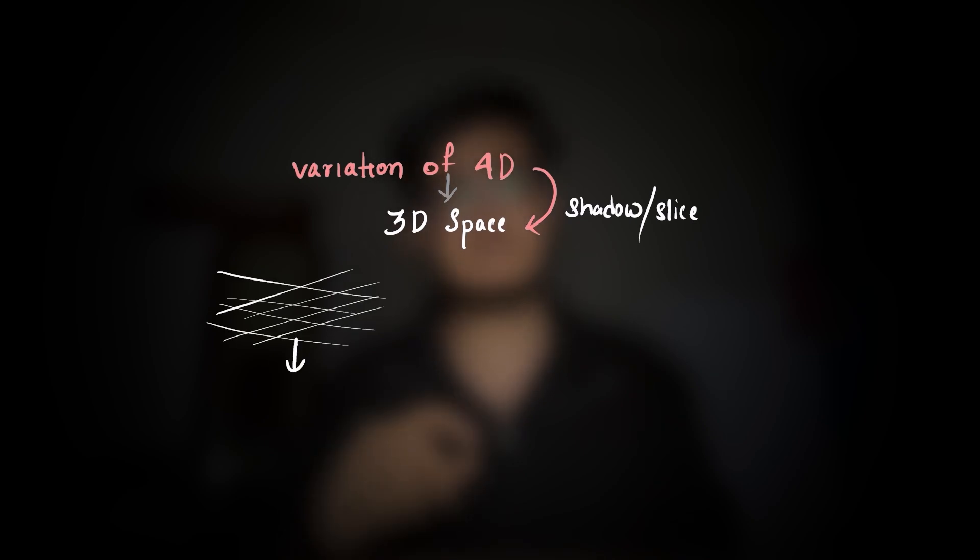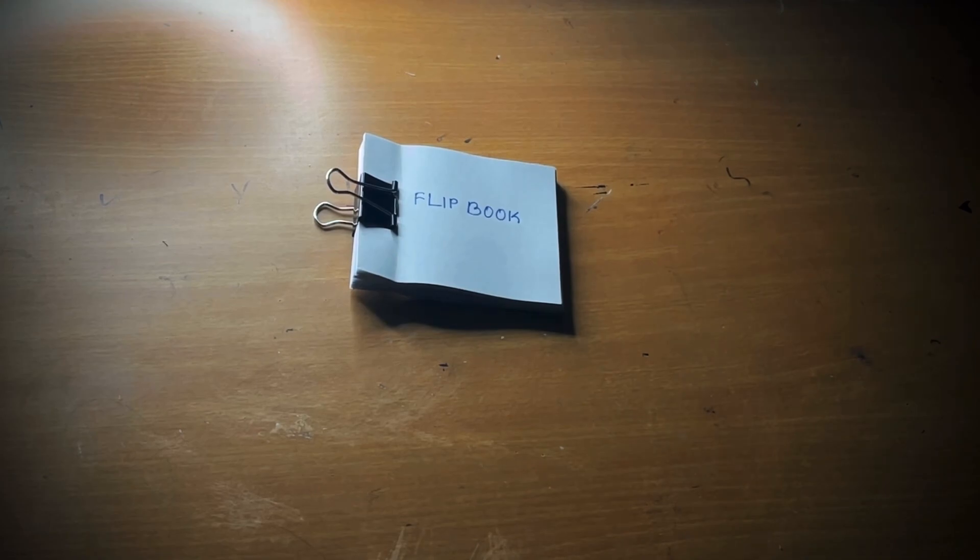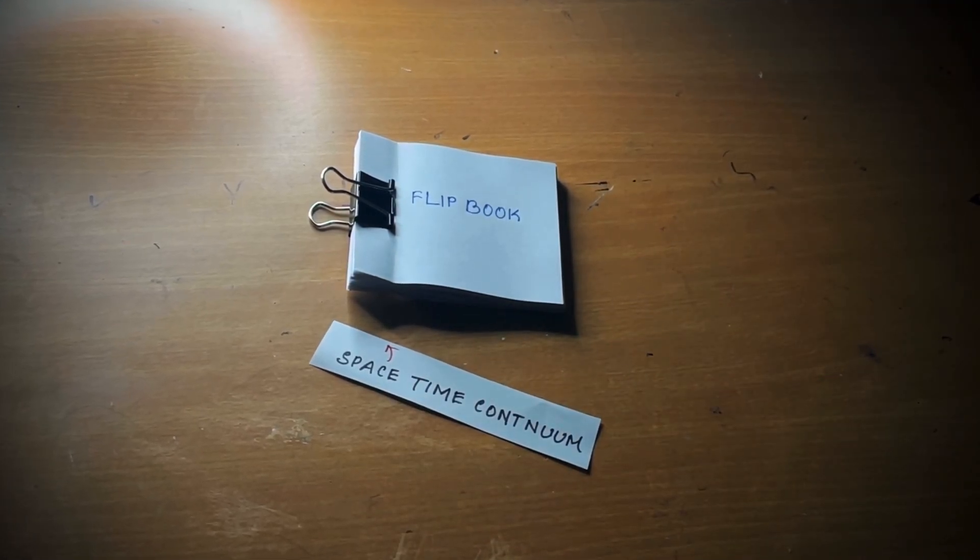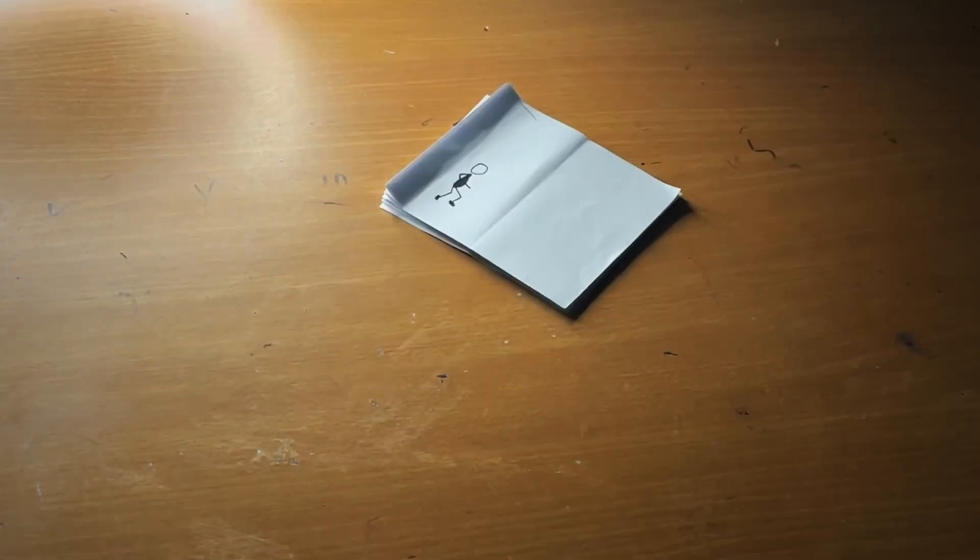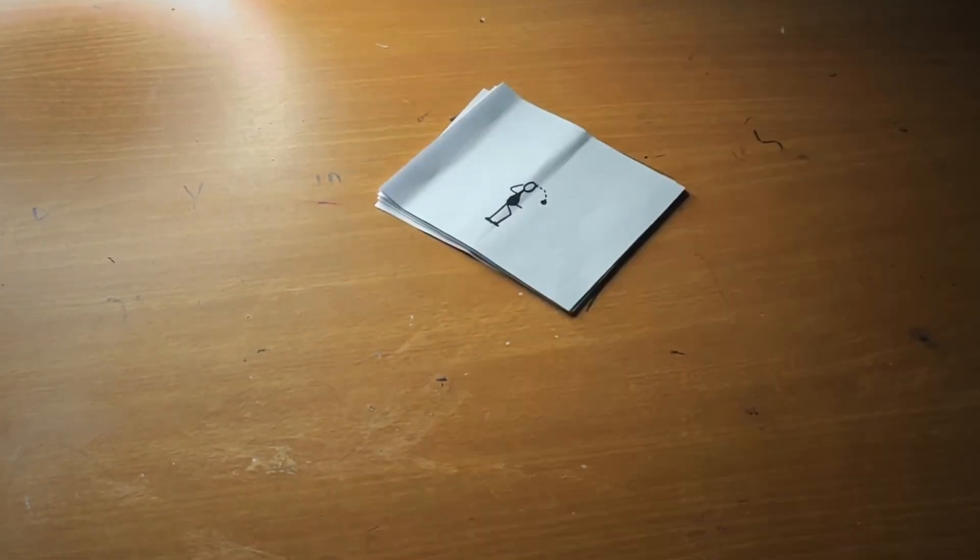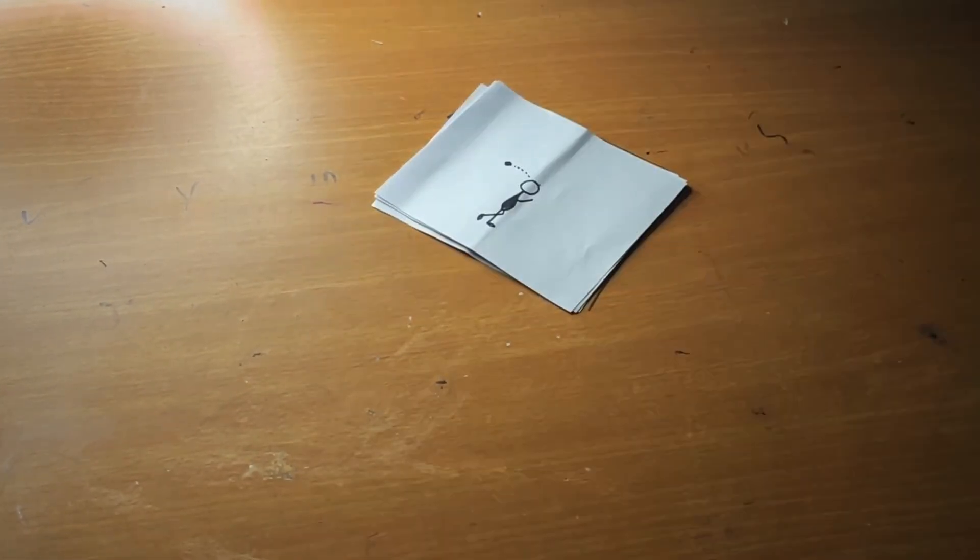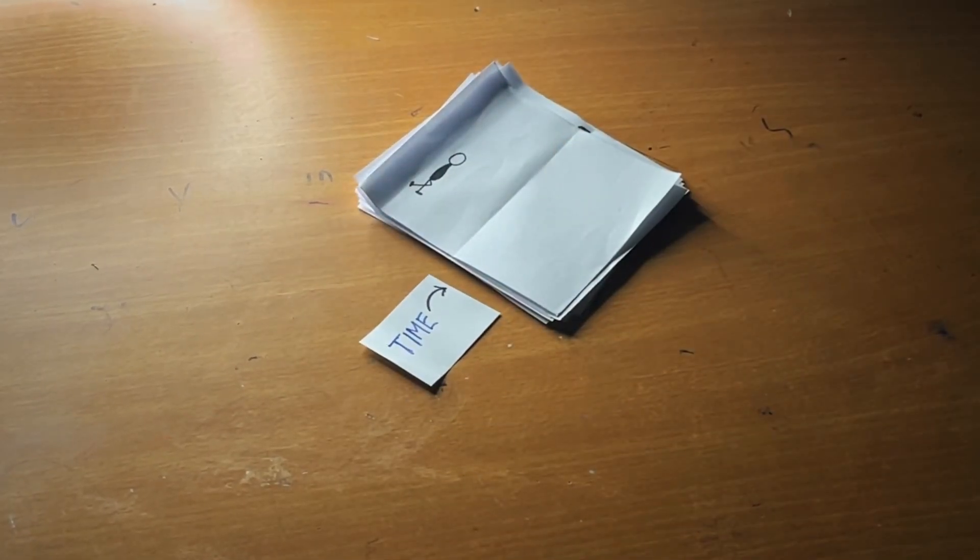What if our entire 3D space is just a slice of a 4D world? Okay, now imagine a flip book. What is the connection between a flip book and spacetime continuum? Each page is a still 3D world, like a frozen moment in time. As you flip the pages you see motion, you see events unfolding. Think of time as the force that flips these pages.